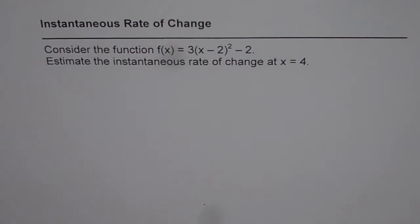The question here is: consider the function f(x) = 3(x - 2)² - 2. Estimate the instantaneous rate of change at x = 4.